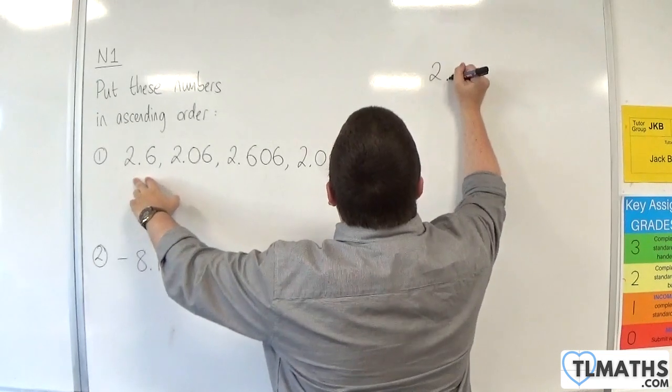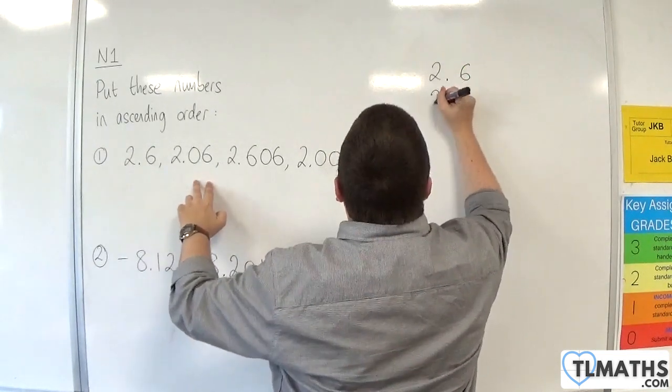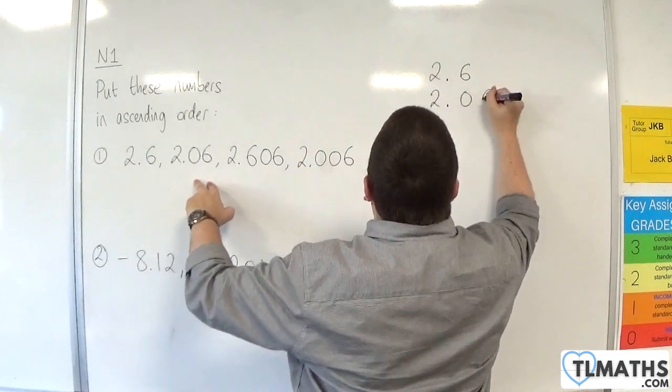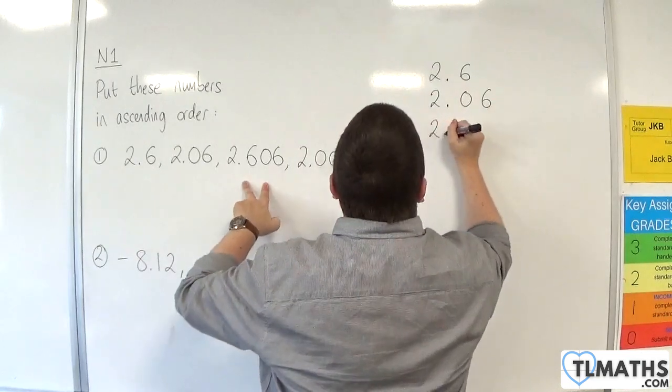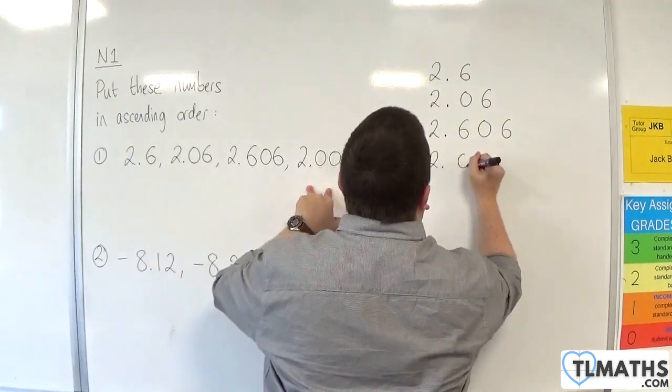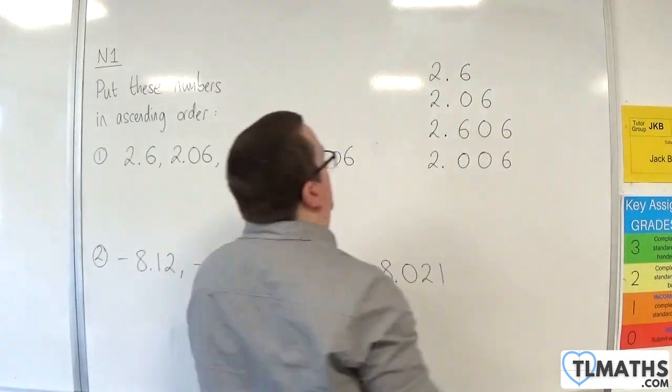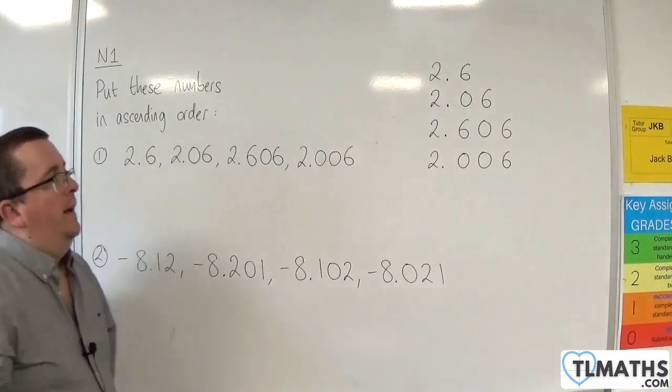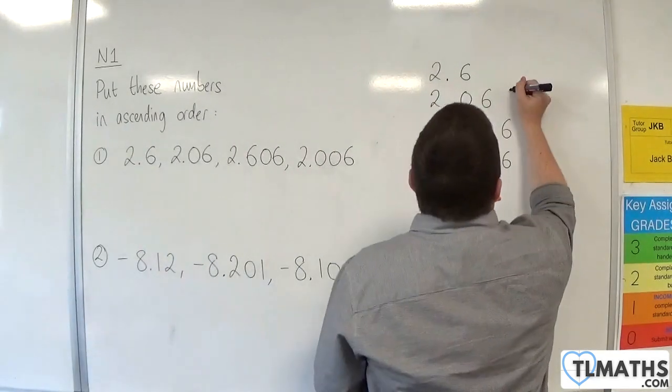So, we have 2.6, 2.06, 2.606, and 2.006. Okay, and then fill in the rest of the gaps with zeros.